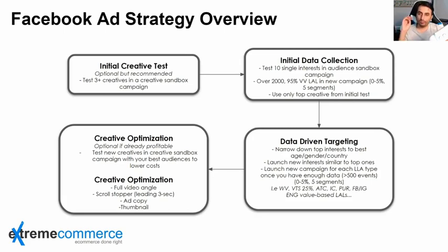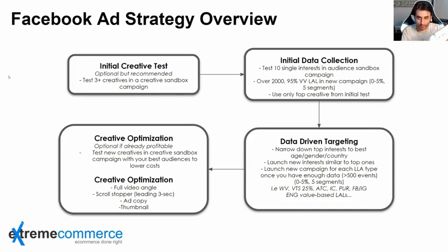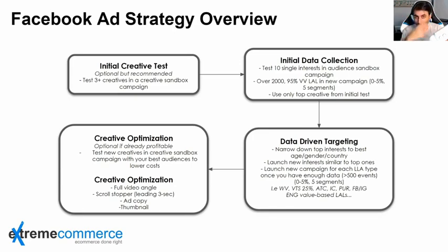Whatever creatives you've made — 3, 4, or 5, depending on your budget — you test them and see which is the best creative, the best video. I'll explain in detail how to determine that. Once you qualify and get one, two, or three winning ad creatives, you identify the best video or image among all of them for that single product.